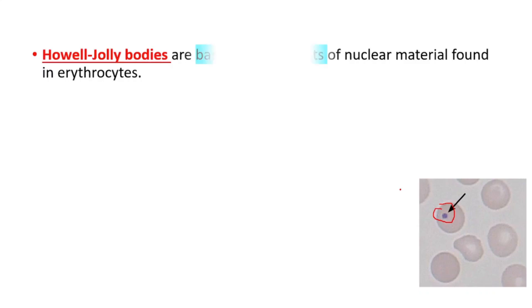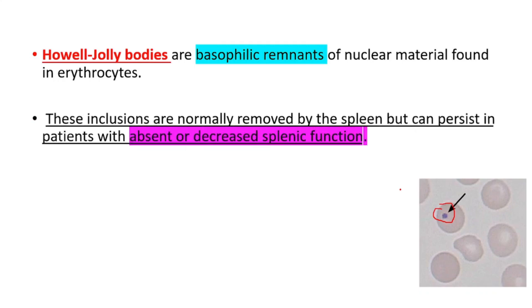Today we'll be looking at Howell-Jolly bodies — what are they, and when can we see them. Howell-Jolly bodies are basophilic remnants of nuclear material found in red blood cells (erythrocytes). These inclusions are normally removed by the spleen, but they can persist in patients with absent or decreased splenic function.